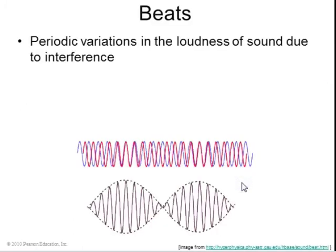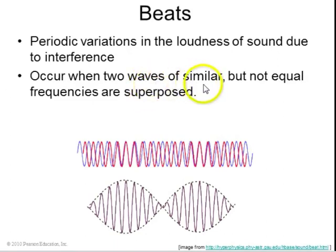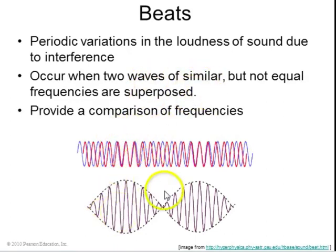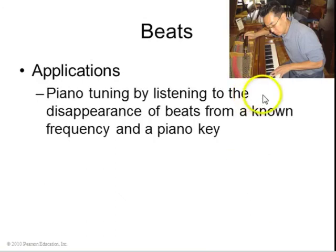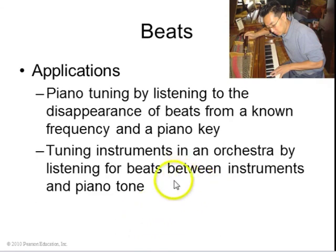Finally, there's beats. If you have two waves of similar but not equal frequencies and you superpose them, you can get this phenomenon of beating where the sound produced gets loud because of constructive interference and then later quiet because of destructive interference. And then loud again and quiet again. This has an application when you're tuning pianos. If you have a known frequency source, like a tuning fork, and you play it at the same time as a piano key, and you hear beats, then you know that the frequency is not quite the same. If you make those beats go away, then the frequency is the same. You can do this the same thing if you're tuning an orchestra to a piano tone. You're listening to the beats and you're trying to make them get slower and go away.